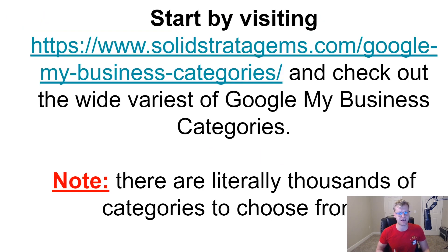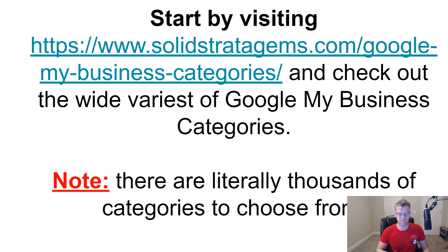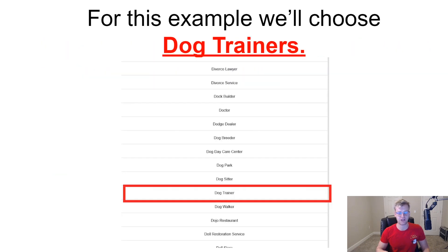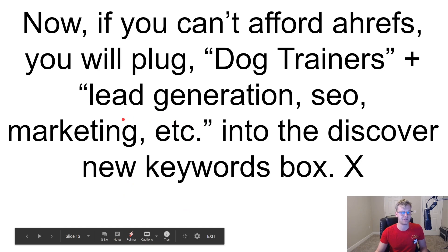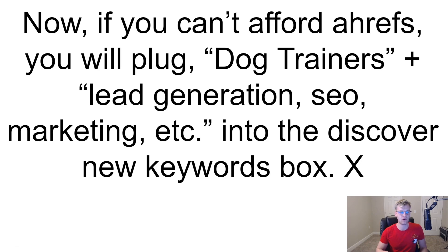What you're going to do is start by visiting a link — I'll leave it in the description — where you can check out the full list of different Google My Business categories. There are literally thousands of categories to choose from. I chose dog trainer for my example; I scrolled down for about 40 seconds until I found it. What you're going to do is take the word 'dog trainers' and plug in different keywords like lead gen, SEO, and marketing into the 'Discover New Keywords' box on Google Keyword Planner.